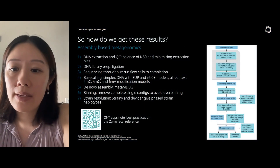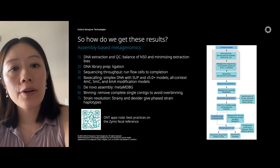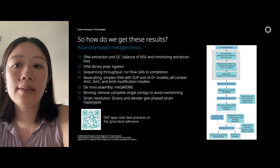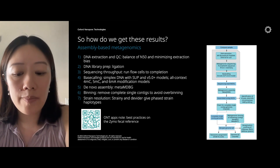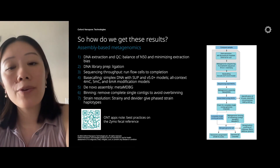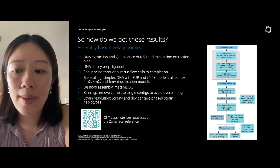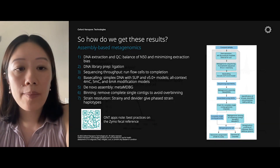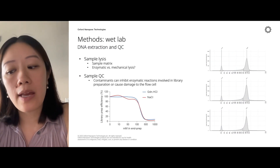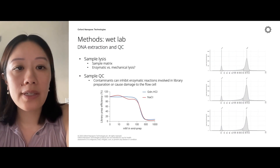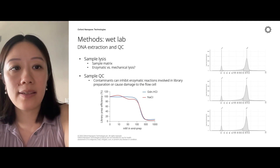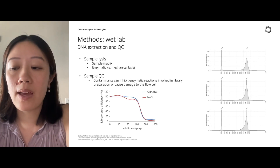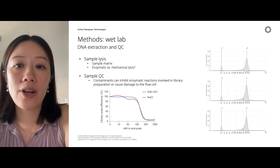On the right is a diagram of the workflow for our compost from wet lab to bioinformatics. I won't be going through every method in detail, but I will be highlighting some key decisions that we made that are hopefully helpful if you're trying to work with environmental samples. Beginning with wet lab methods, the most critical decision is DNA extraction — how you're lysing your cells and getting them separated from your matrix, effectively extracting DNA.